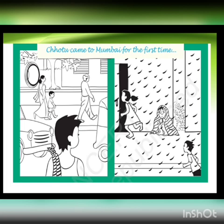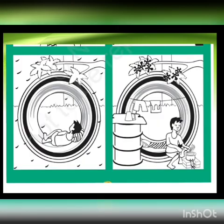Later he decided to make this pipe as his home. Many people in Mumbai who came there for work start living in drainage pipes because they don't have a proper place to live in. Because already Mumbai is a very populated city, they don't have any shelter or home where they can stay.